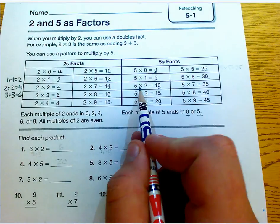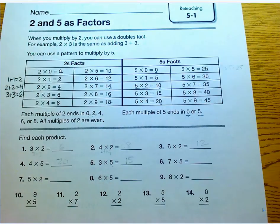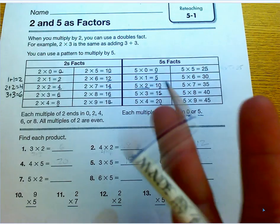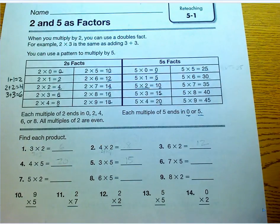And you can also skip count. So let's say, let's do 5 times 2, let's skip count by 5, 2 times: 5, 10. And most students can do that. So you have 10, 10's your answer.